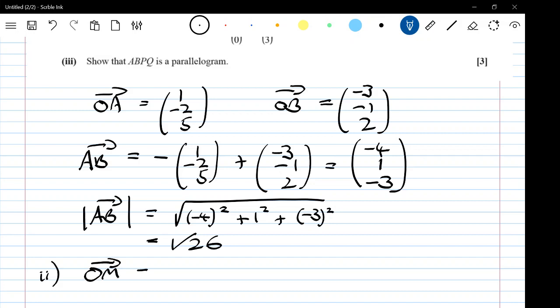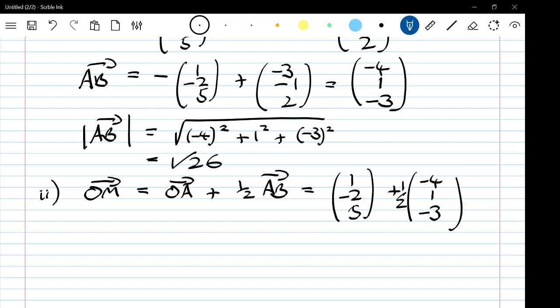So if we go to A and add on half of AB, and AB is, that's a half of (-4, 1, -3), we can work that out and it gives us the vector (-1, -3/2, 7/2). Lots of you got that right, that's really well done.